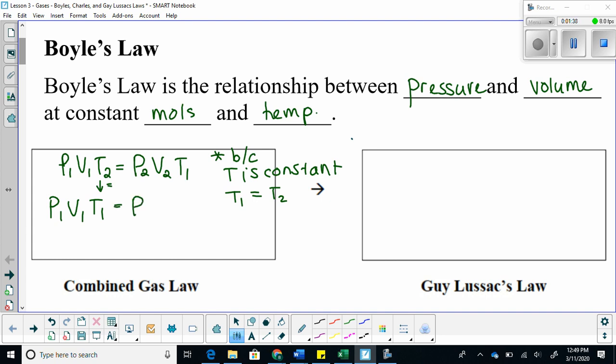Now, because they are on the same side, if I were to divide T1 on either side, it would cancel both of them out. This will then give me Boyle's Law, which is P1 V1 is equal to P2 V2.